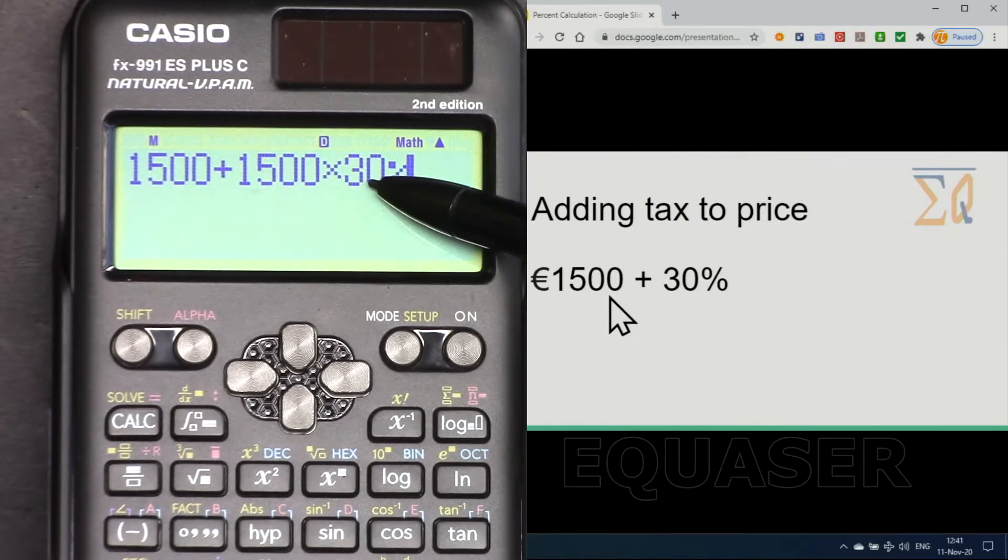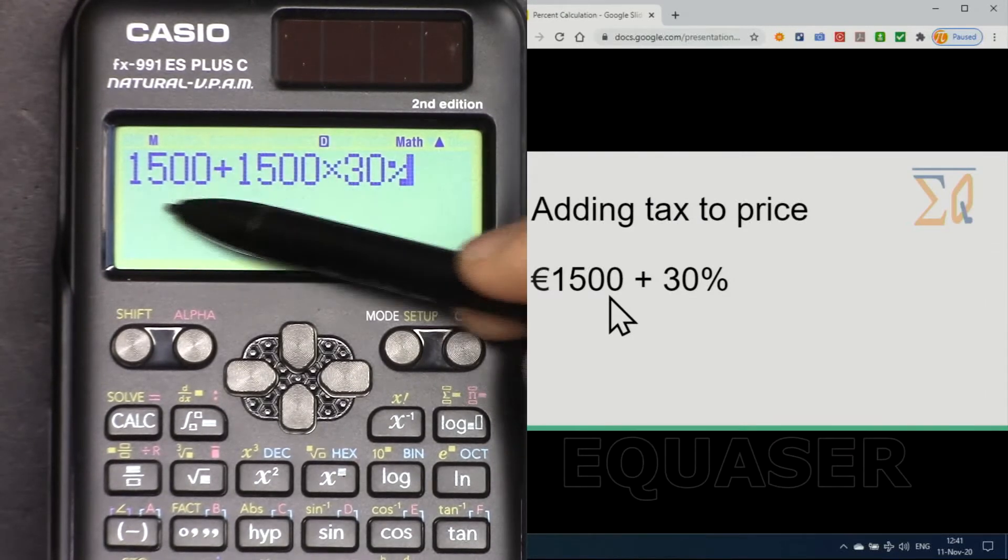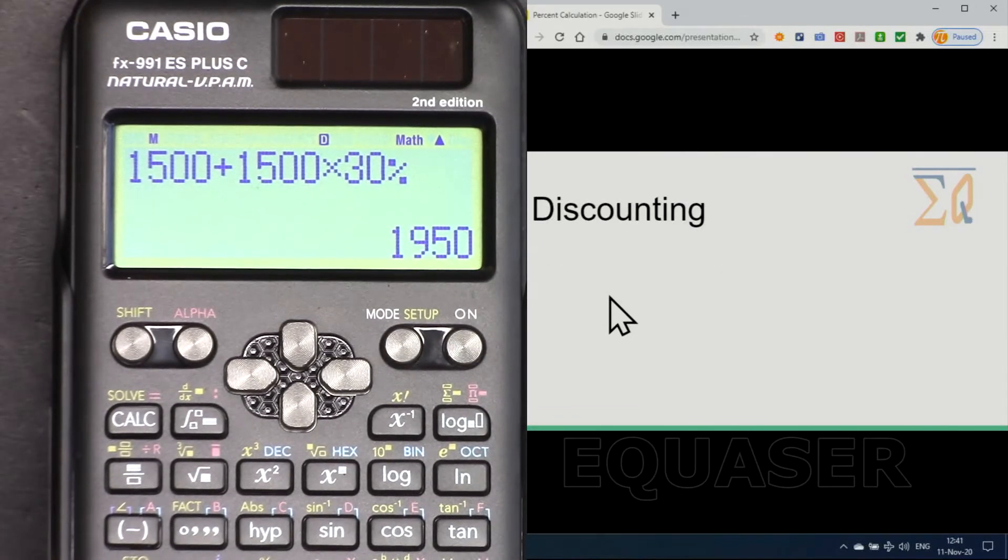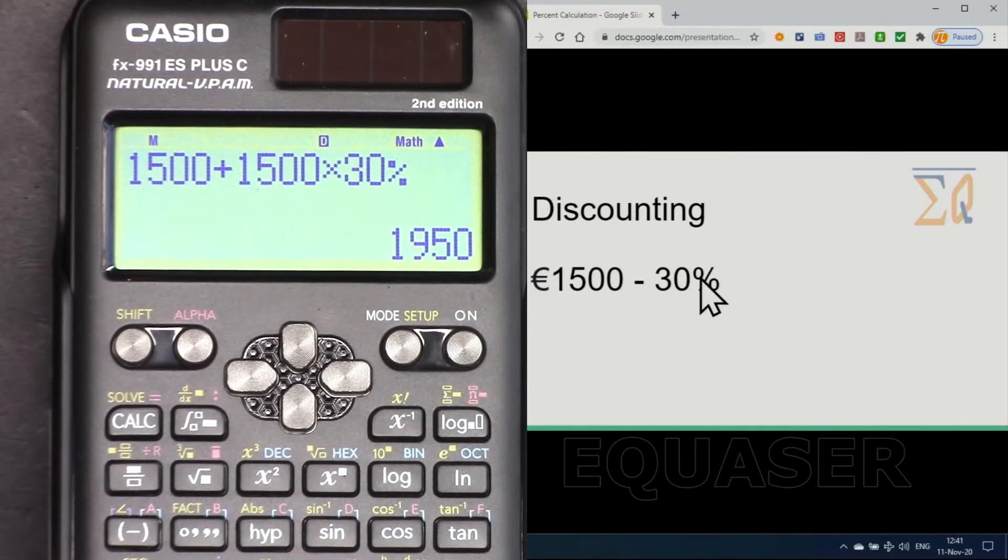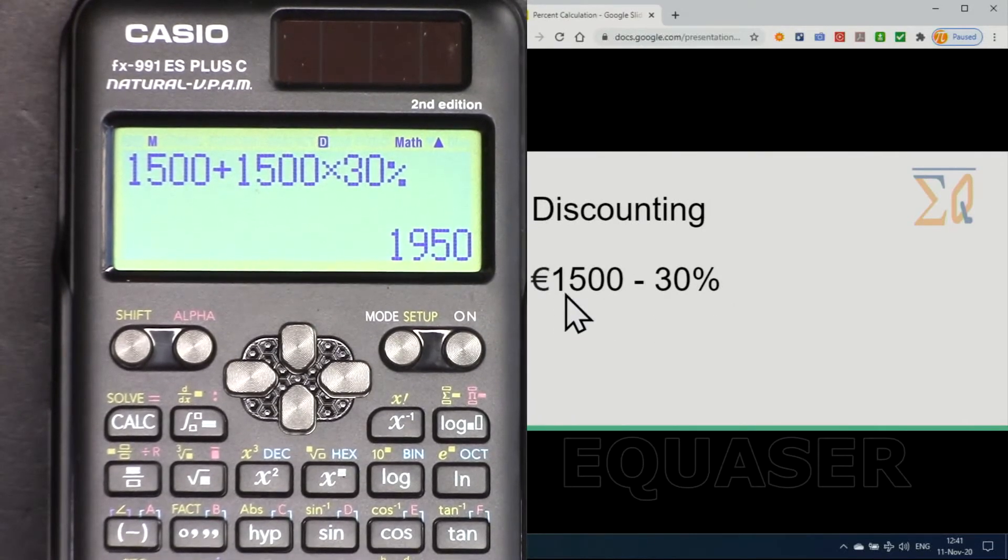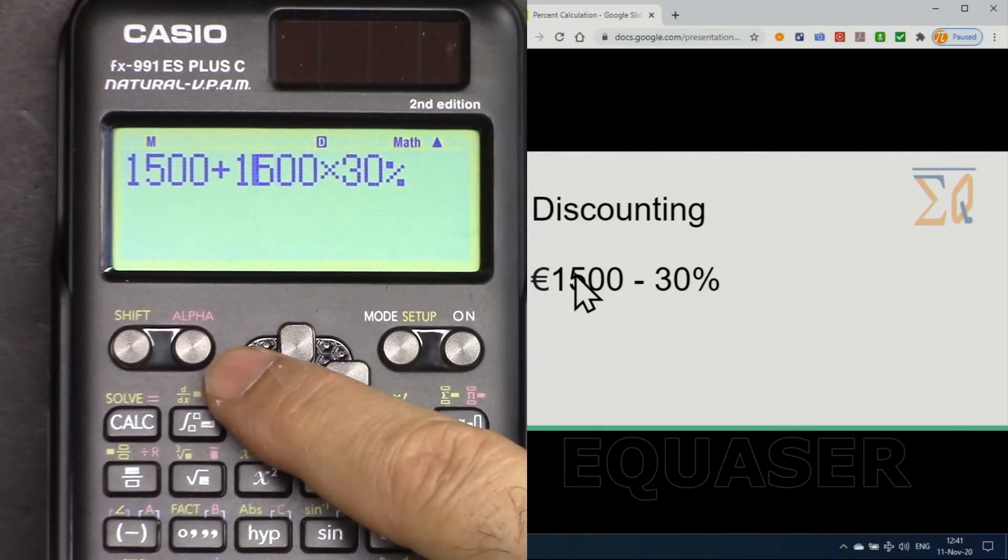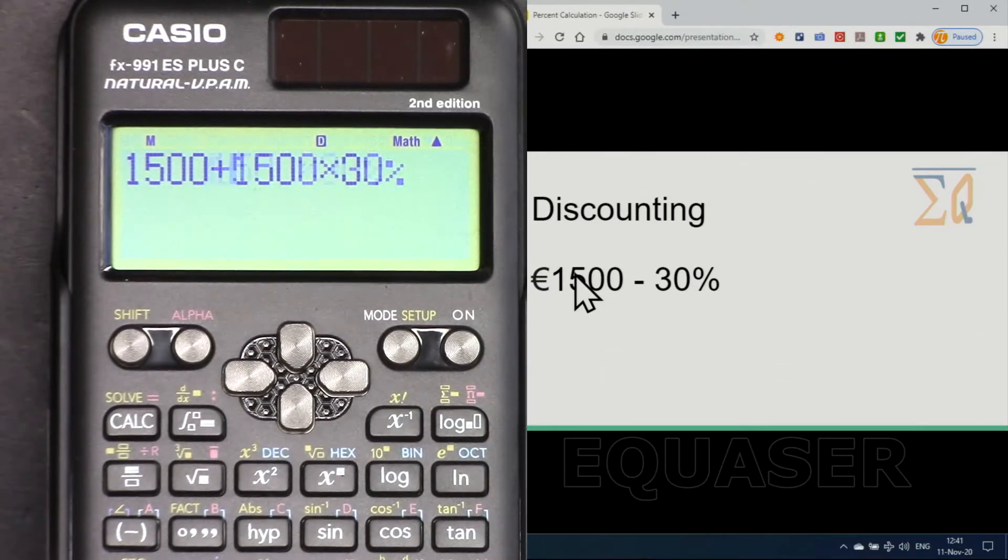And if you want to do discounting or subtract 30% from some value, we change the plus to minus. Let's go back, press delete, and minus.